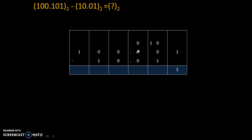Please note that whenever we take borrow, the next digit becomes 10, and 10 is 2 in decimal, and that 2 minus 1 will give us 1. Okay. And 0 minus 0 is 0. 0 minus 0 is 0.